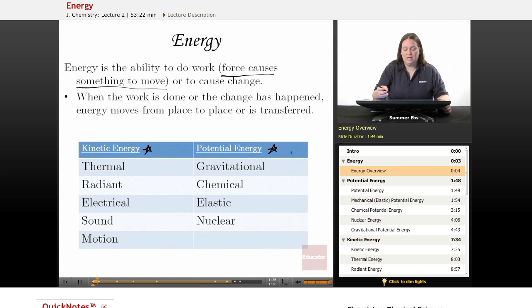Potential energy is like the potential to have energy. It's like energy that is stored or energy that exists because of an object's position. So gravitational energy, chemical energy, elastic, and nuclear, those are all forms of stored energy or energy by position. We're going to talk about those a lot more in detail now.